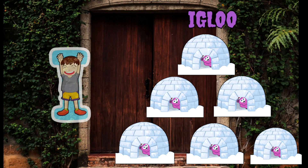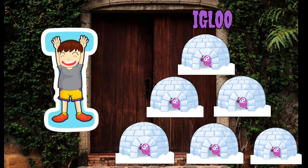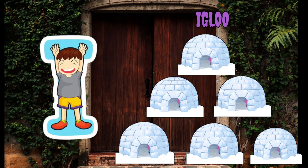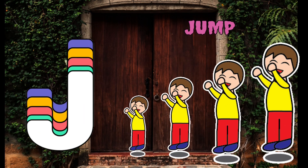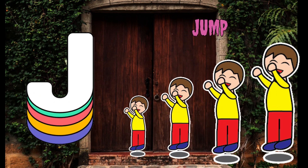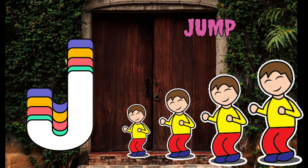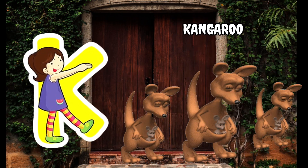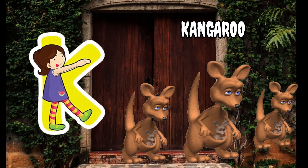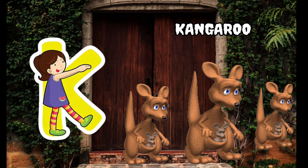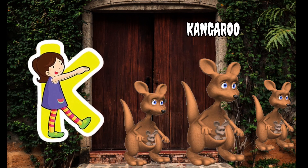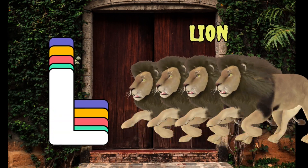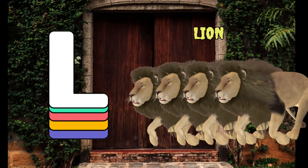I is for igloo, i-i-igloo. J is for jump, j-j-jump. K is for kangaroo, k-k-kangaroo. L is for lion, l-l-lion.